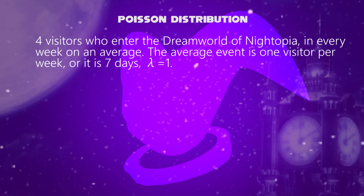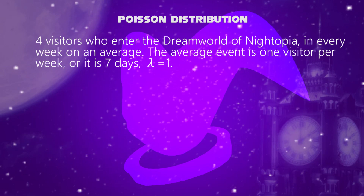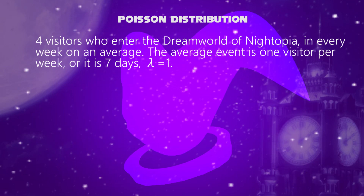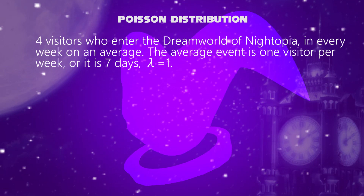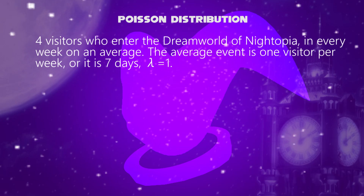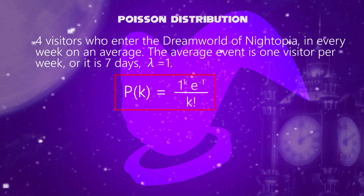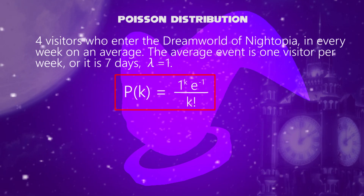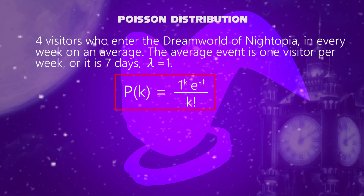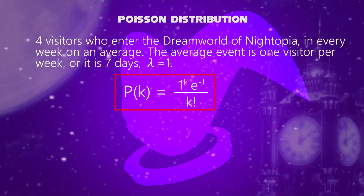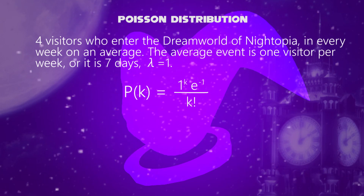The average event is one visitor per week, or seven days, so lambda equals one. Thus, this is in terms of k number of visitors in every week, which is one to the k power times the reciprocal of Euler's number, divided by k factorial.